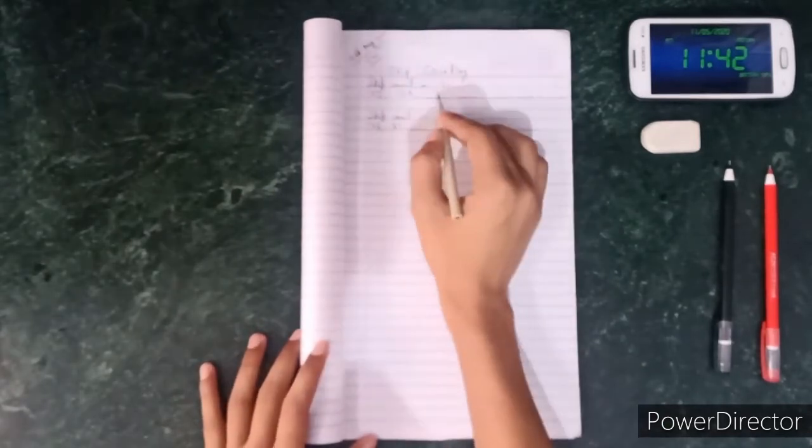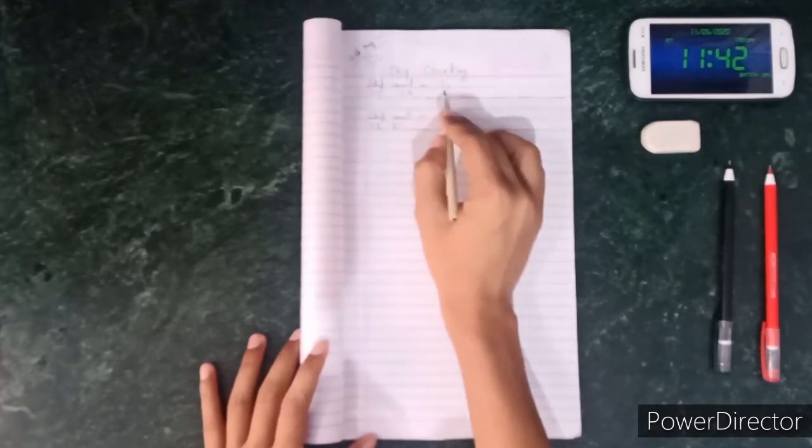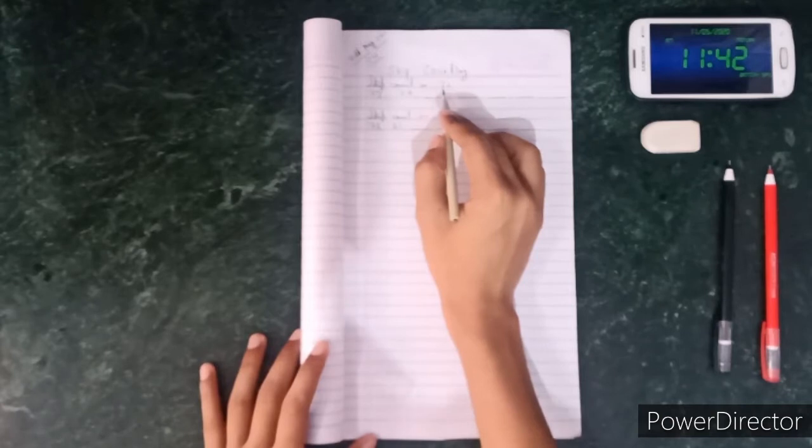Skip Counting. You can make it by adding numbers. Like Skip Counting in 2. Then you have to add it to 2.